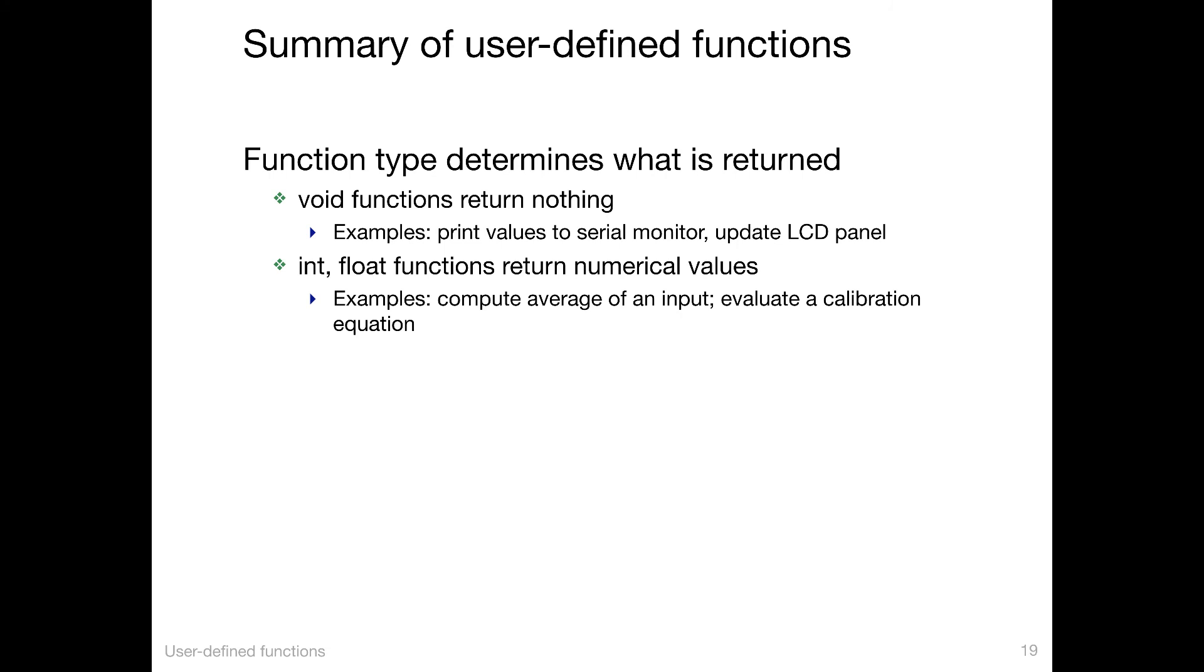Int and float functions return numerical values. And those are very handy when you want to do a calculation that returns especially single values. So we just saw that we can use a function to compute the average of an input. Another good example is when we want to evaluate a calibration equation. For example, to convert a thermistor reading to a temperature. There is a polynomial function with some constants with lots of digits. You can hide those coefficients inside the function. The user gives the function a value, say the analogRead value of a pin, and you return the temperature. And that's very handy to keep the constants associated with that thermistor out of the way of all the rest of the code.